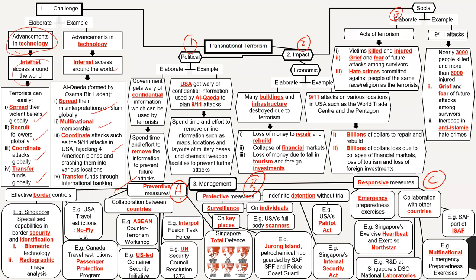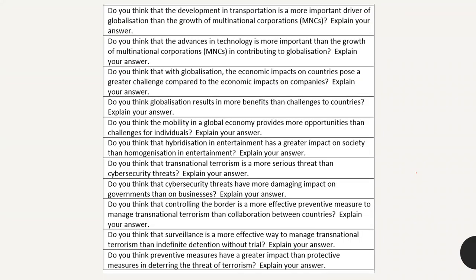Some countries have laws like detention without trial — in Singapore, we have the Internal Security Act, which allows us to arrest suspected terrorists. Lastly, responsive measures prepare for the consequences if a terrorist attack does occur. This includes emergency preparedness exercises and drills. For example, exercises like Heartbeat and North Star conducted in schools help prepare people for a terrorist attack. Some drills are even multinational, involving multiple countries in joint emergency preparedness exercises.